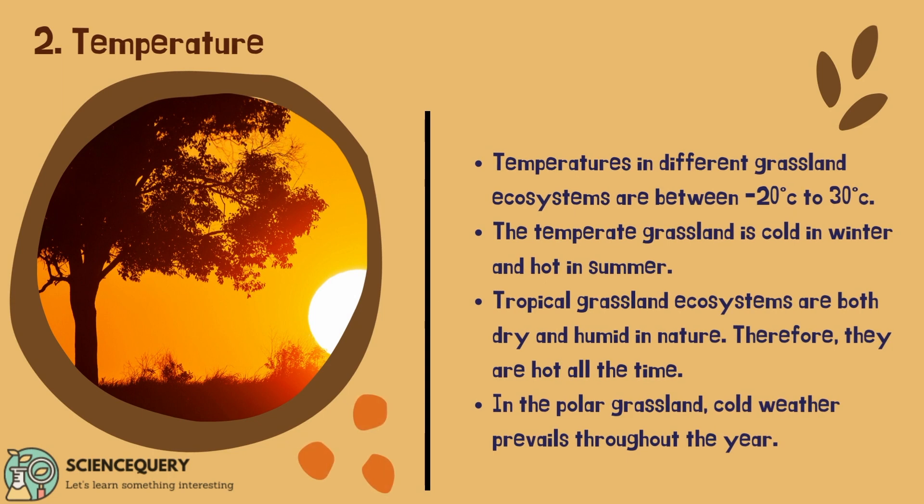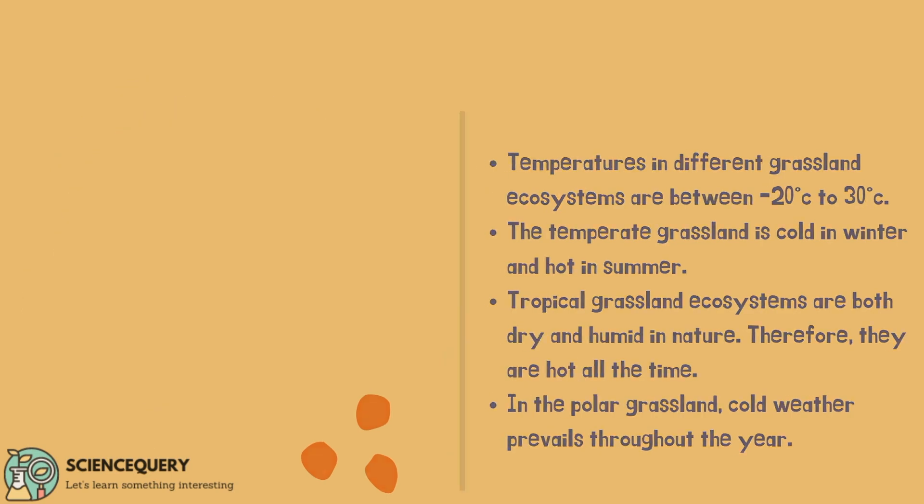The second abiotic factor or component of the grassland ecosystem is temperature. Temperatures in different grassland ecosystems range between minus 20 degrees to 30 degrees centigrade. The temperate grassland is cold in winter and hot in summer. Tropical grassland ecosystems are both dry and humid in nature, therefore they are hot all the time. In the polar grassland, cold weather prevails throughout the year.